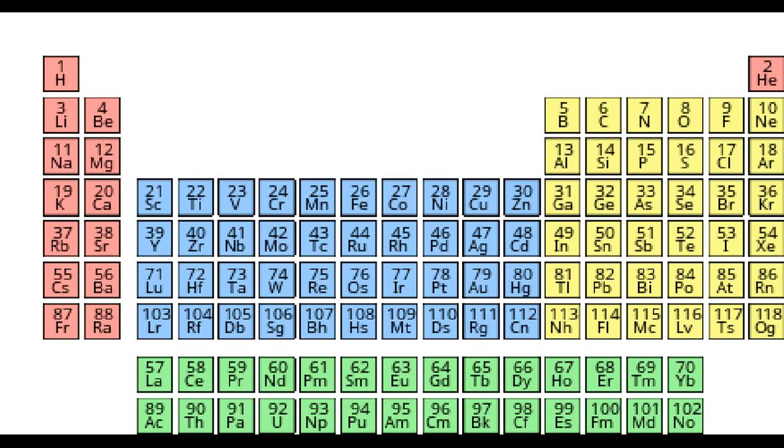Si is for Silicon. P is for Phosphorus. S is for Sulphur. Cl is for Chlorine. Ar is for Argon.